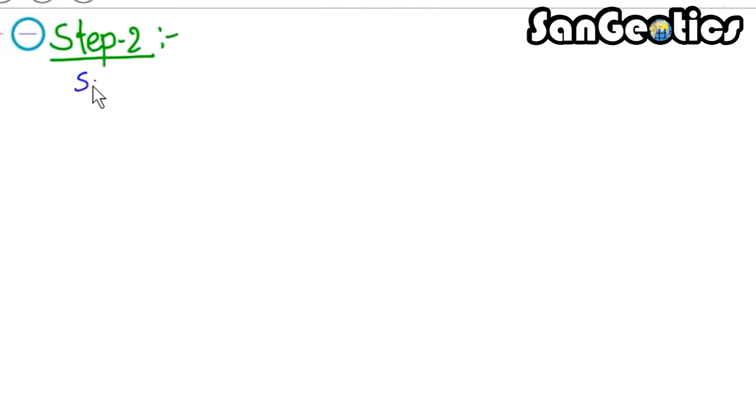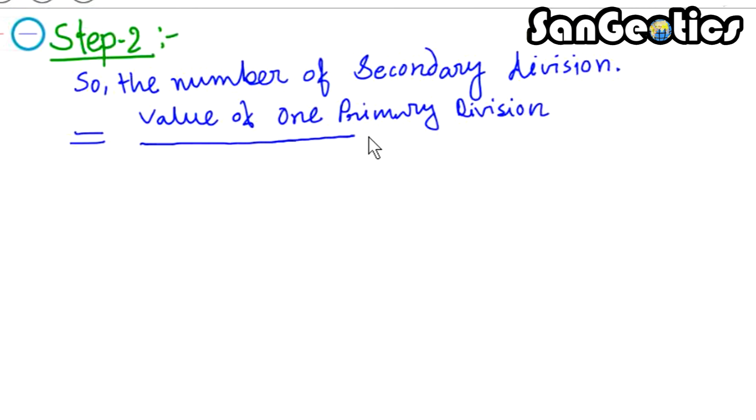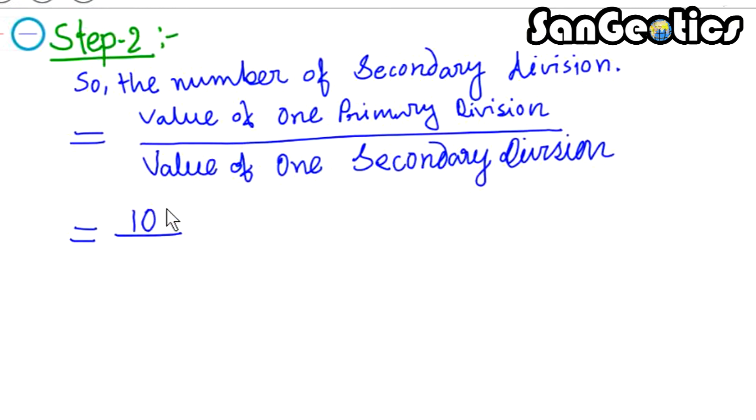Step 2. The number of secondary division is equal to value of one primary division divided by value of one secondary division, equals 10 km divided by 1 km, equals 10 divisions.